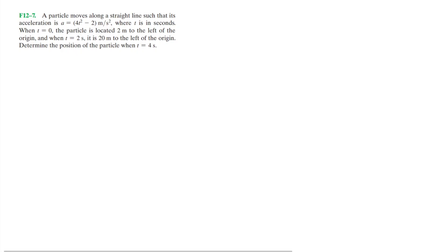Problem F12-7: a particle moves along a straight line such that its acceleration is a = 4t² - 2 meters per second squared, where t is in seconds. When t = 0, the particle is located 2 meters to the left of the origin, and when t = 2 seconds it is 20 meters to the left of the origin. Determine the position of the particle when t = 4 seconds.